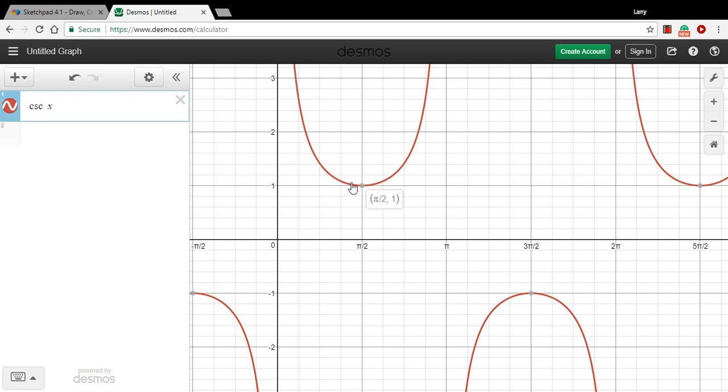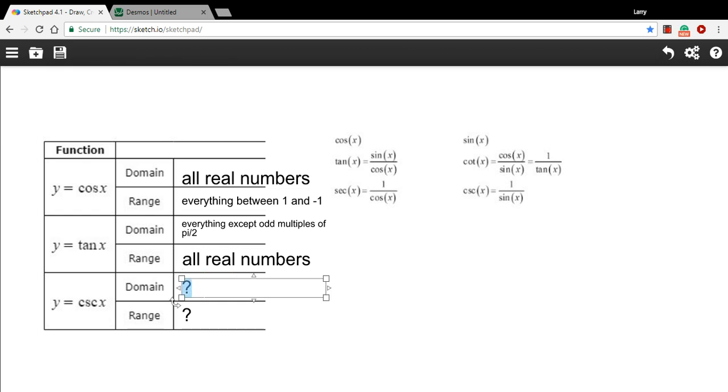And on the domain, we have asymptotes again, just like we did for the tangent and the cotangent. You can see with the cosecant, the asymptotes here are at pi, at 2 pi, so it's going to be multiples of pi. So we can say the domain is everything except multiples of pi.